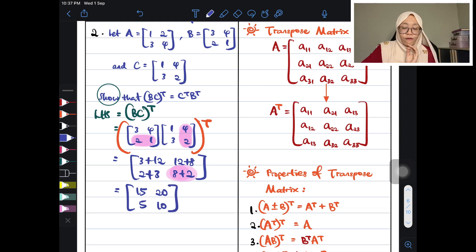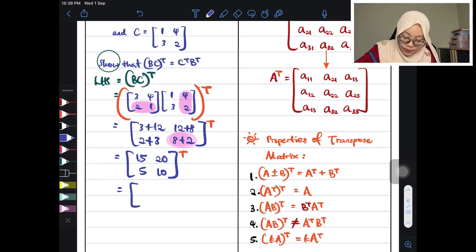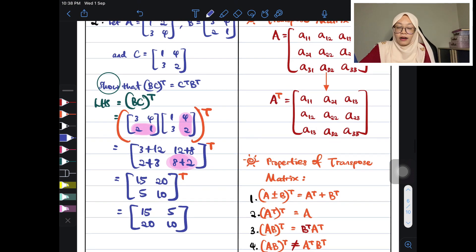But you forgot one thing. You forgot to put down your T. Not you, it's me. I'm the one who forgot to put my T, which is wrong if I forgot about it. I must write down the T as long as I haven't transposed it. So now I will transpose it. It will become 15, 20, 5, 10. This is now the completed transpose.